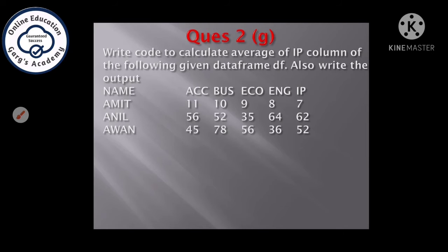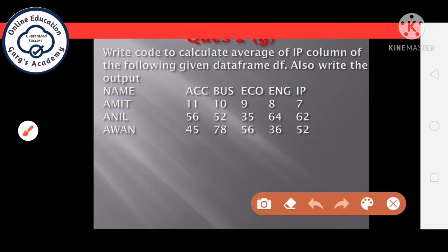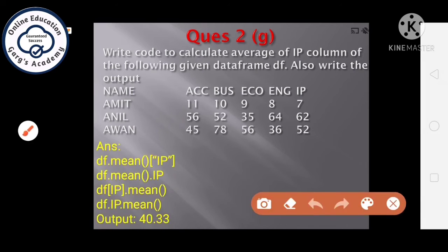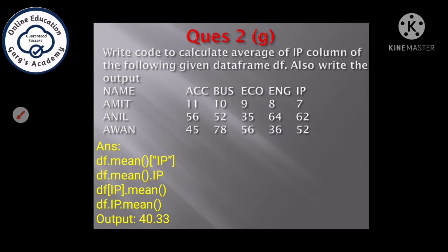Next question, write code to calculate average of IP column of following given data frame df, also write the output. Students, there are 4 possible options to find the average of IP column. How? Let's see. There are 4 options. First, you can find the mean using df dot mean. After finding the mean or average, if you want to display only the result of IP column, you can write in this way. You can also write IP that is column name in this way. Python also allows it. Next option is, before finding the average function, you can give the name of the column in this way. Also, you can write in this way. Here, by mistake, I have omitted, it should be written L in this way. Next, what will be the output? It is 14.33.